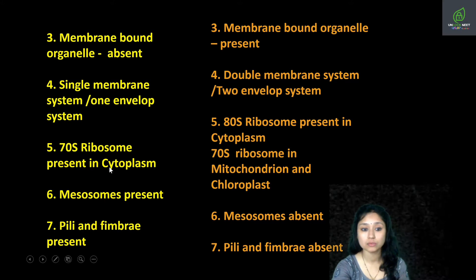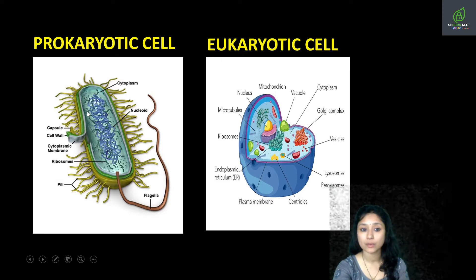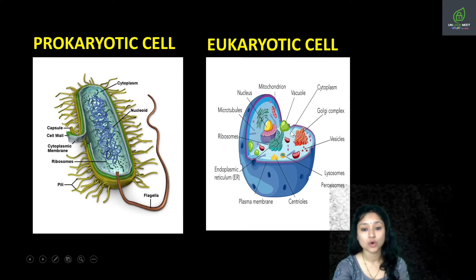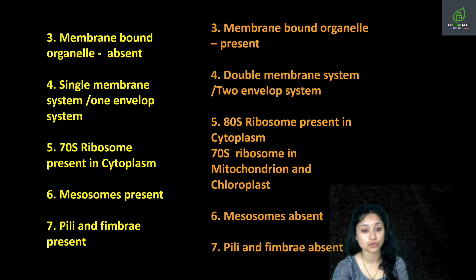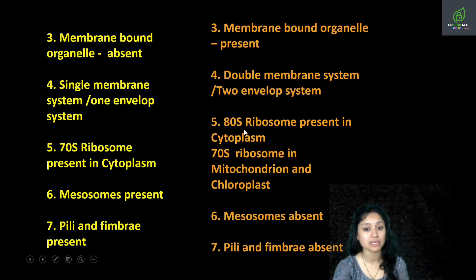Next is ribosomes — the non-membrane-bound organelles. In prokaryotic cells, 70S type ribosomes are present in the cytoplasm. In eukaryotic cells, ribosomes present in the cytoplasm are 80S type, while ribosomes present in mitochondria and chloroplasts are 70S type. Ribosomes are involved in protein synthesis. In prokaryotes they are only in the cytoplasm since there are no membrane-bound organelles, whereas 70S ribosomes in eukaryotes are found in mitochondria and chloroplasts, and 80S in the cytoplasm.